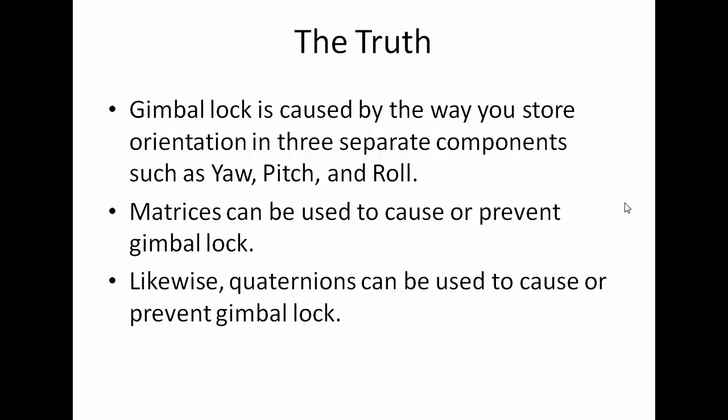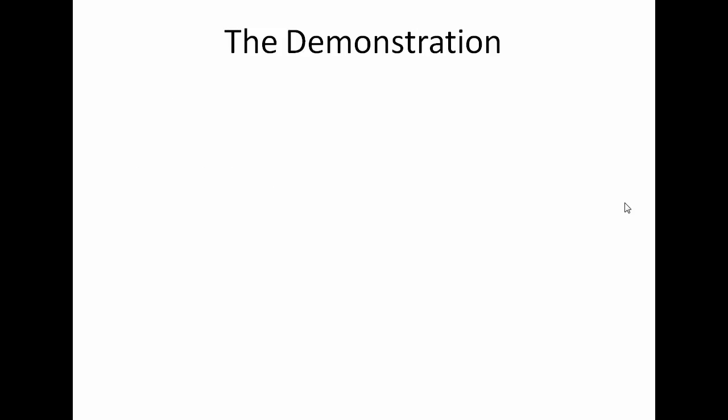The truth: gimbal lock is caused by the way you store orientation in three separate components such as yaw, pitch, and roll. Matrices can be used to cause or prevent gimbal lock. Likewise, quaternions can be used to cause or prevent gimbal lock. We'll demonstrate that with an XNA program. The complete project with all the graphics will be available on the virtuallyprogramming.com website for download.